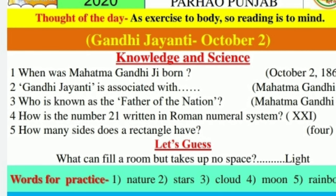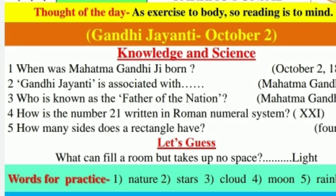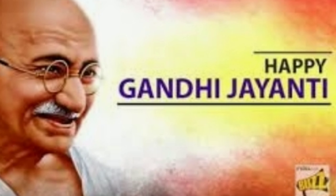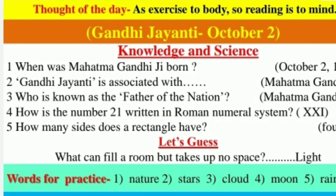Let's talk about today's questions. First: when was Mahatma Gandhiji born? The answer is October 2nd, 1869. Next question: Gandhi Jayanti is associated with whom? Its answer is Mahatma Gandhiji. Next question: who is known as the father of the nation? The answer is Mahatma Gandhiji.